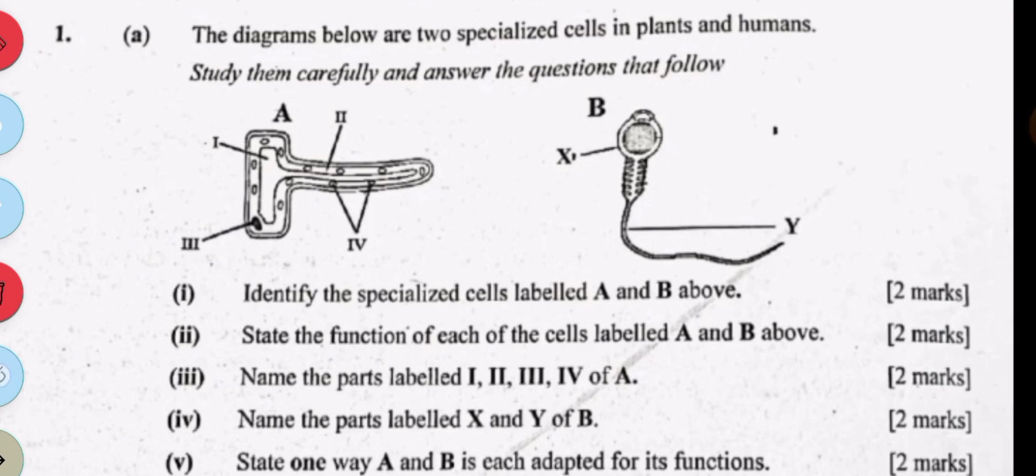The diagrams below are two specialized cells in plants and humans. Study them carefully and answer the questions that follow. So we have A here and we have B here. Identify the specialized cells labeled A and B.